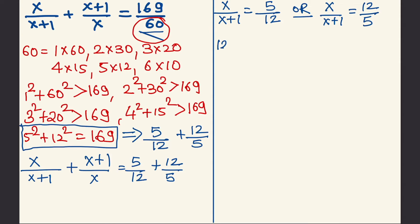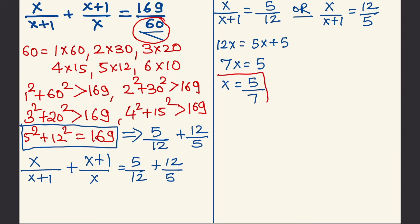Solving the first equation: 7x = 5, so x = 5/7. The first root of the quadratic equation is x = 5/7.